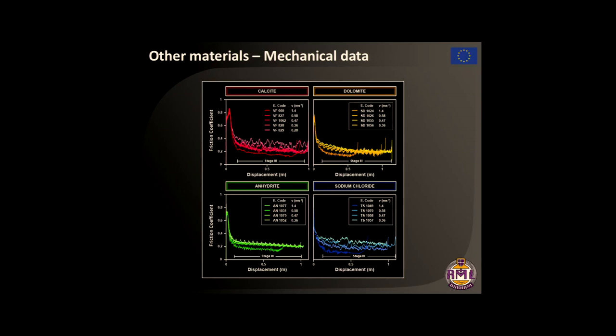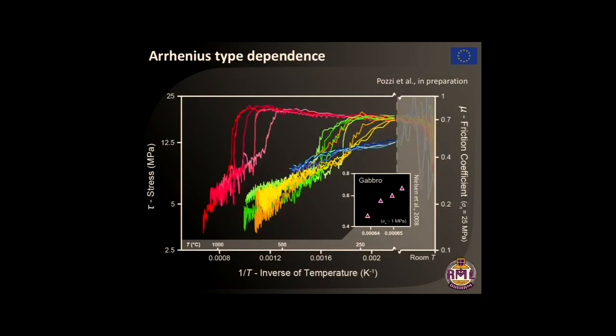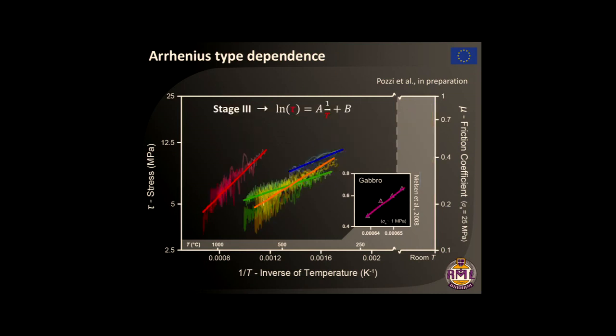And this is the classic way of representing the experiment: displacement against friction coefficient. What if we take into account the temperature and the stress rather than the friction coefficient and plot it in an Arrhenius space? This is what you obtain. Basically the experiment evolves from right to left with increasing temperature, the inverse of temperature and shear stress. And we see, this is just gabbro from Nielsen in 2008 that already shows a linear relationship that is typical of melts because they show Arrhenius type relationship.